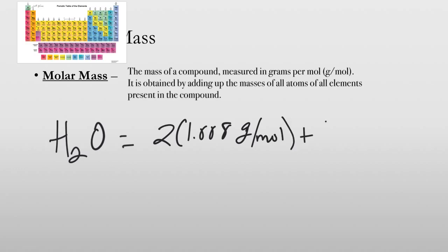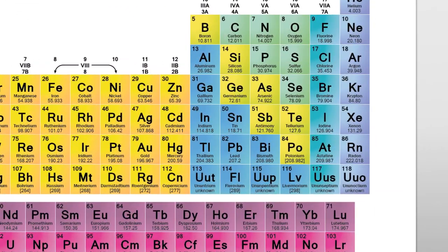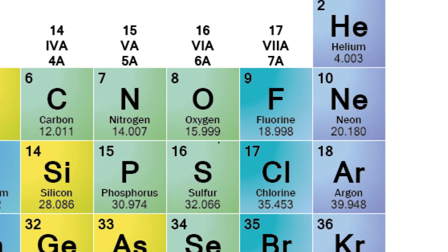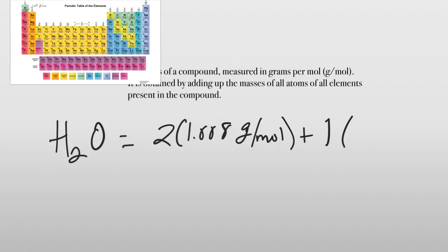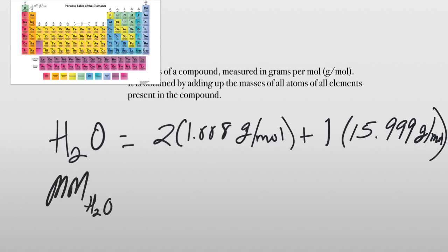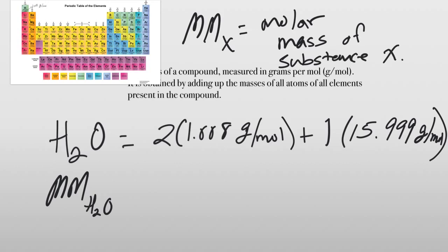And we have one oxygen atom, so I'm going to put plus one times. And if we look over here, oxygen has an atomic mass of 15.999 grams per mole. And so we have 15.999 grams per mole. And we get a molar mass of H2O.